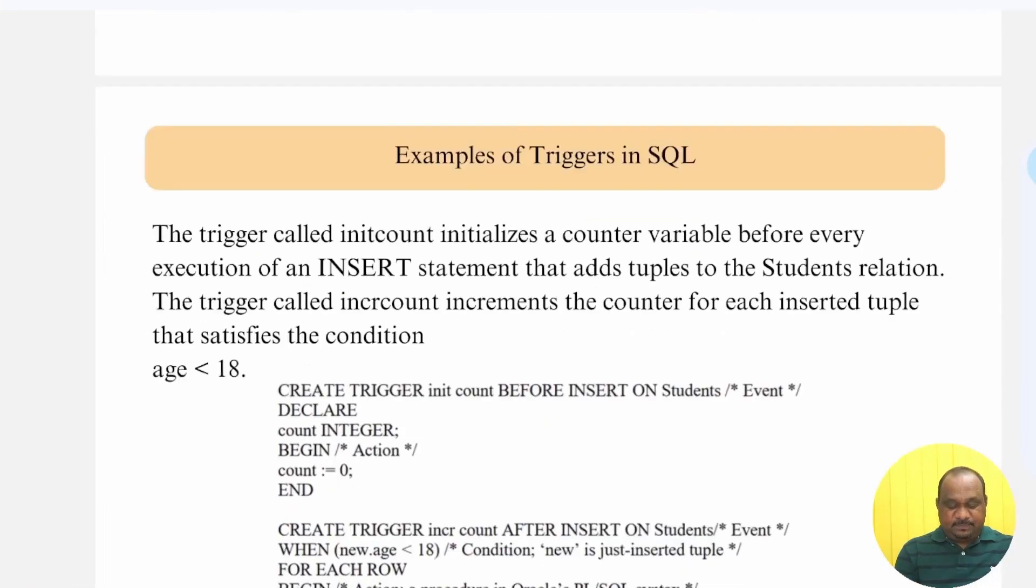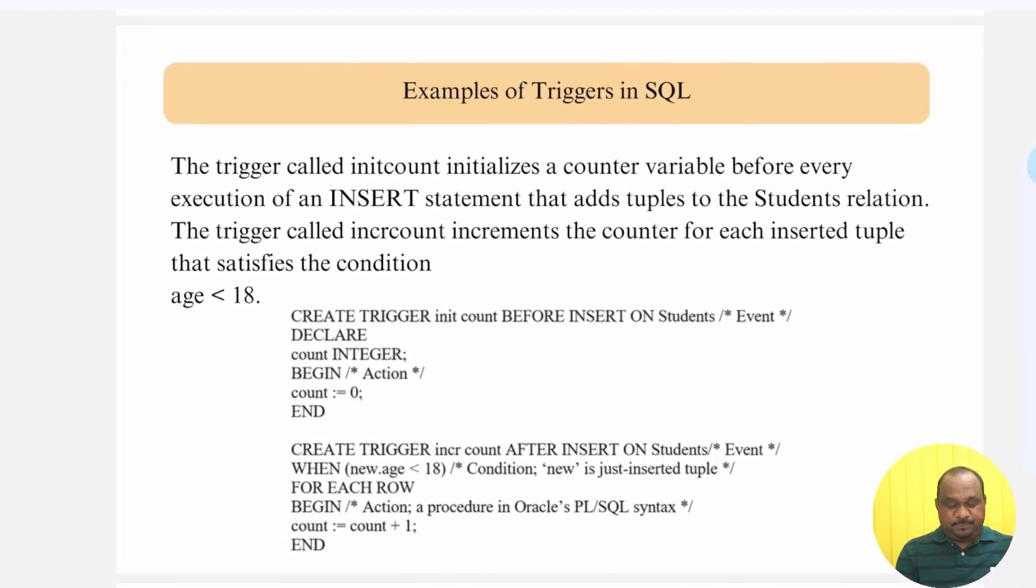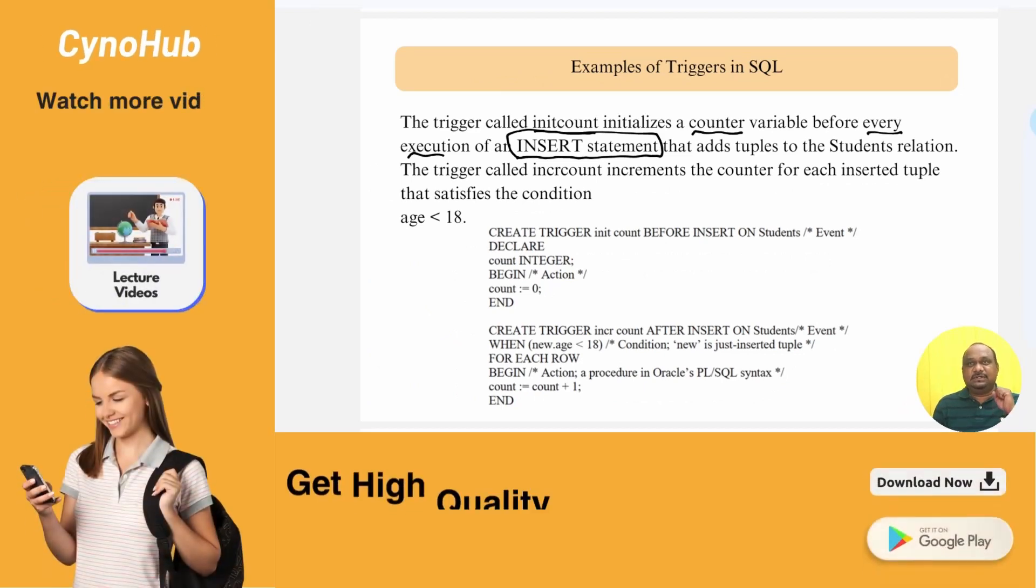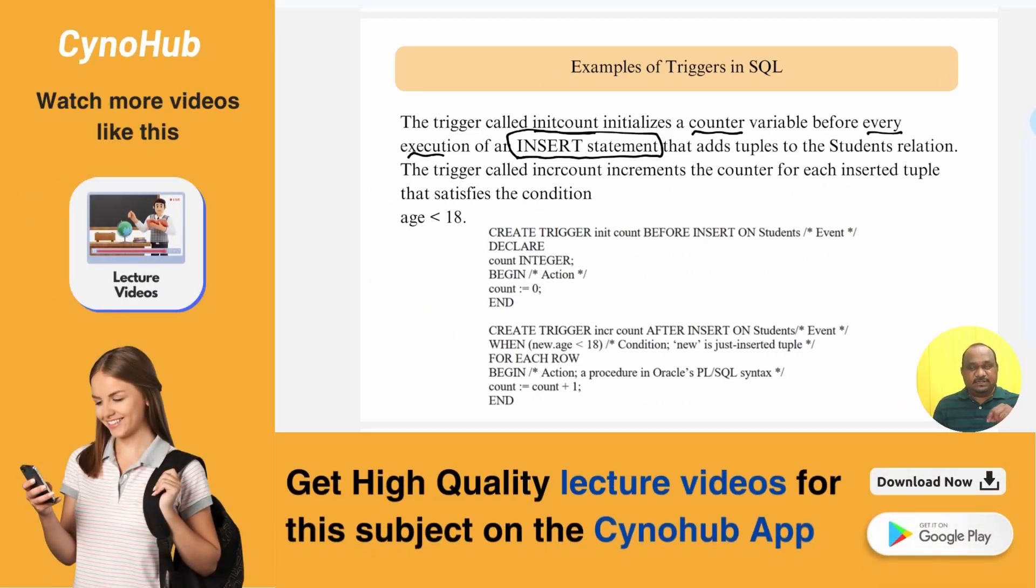Now, take the example. Read the statement here. The trigger called initCount initializes the counter variable before every execution of insert statement. This is your insert statement. Meaning that you are inserting one record to the database, then second record to the database, third record to the database. Before going to insert any record, what DBA administrator required is execute the trigger, based on some condition.